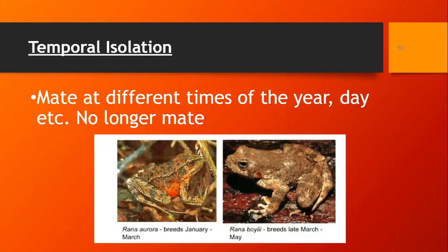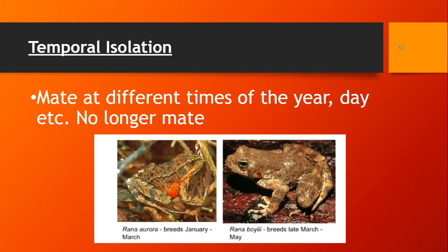Temporal isolation — temporal meaning time — is when organisms mate at different times of the year or different times of the day. For instance, these two frogs are both similar and probably could interbreed if they were together. But one breeds early winter, January to March, and the other breeds late March to May. So when they are actually sexually reproducing, they are not doing so at the same time, and they have formed different species.